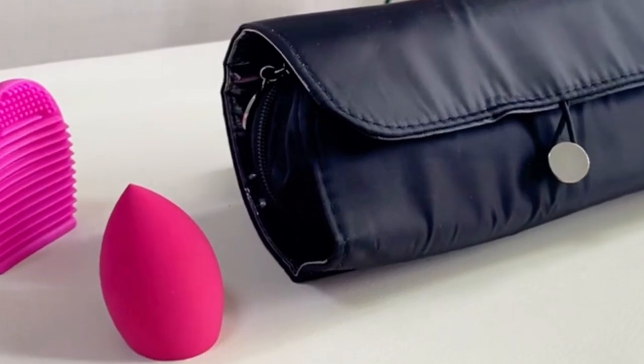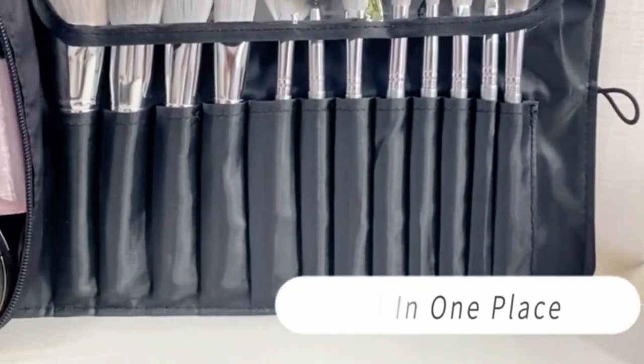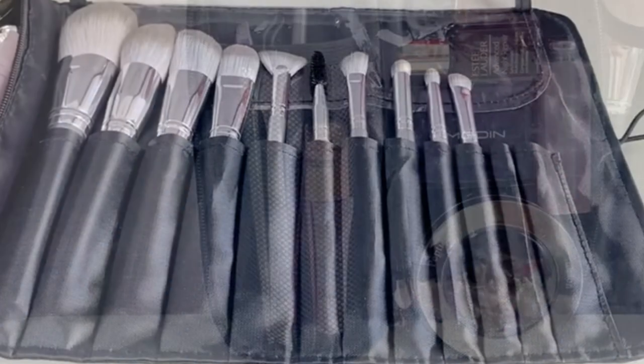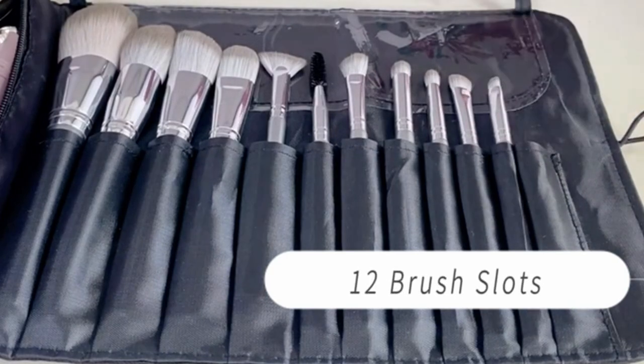Made from high-quality nylon fabric with an additional transparent gasket, the Hiuser case protects your brush bristles from dirt and damage. This ensures your brushes remain clean and in good condition.